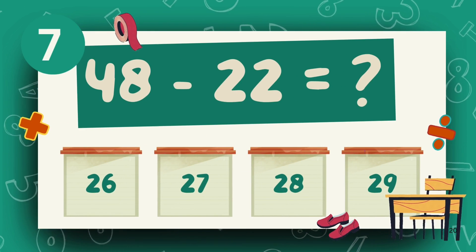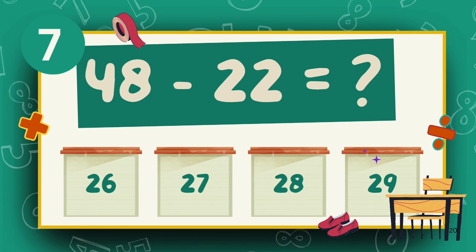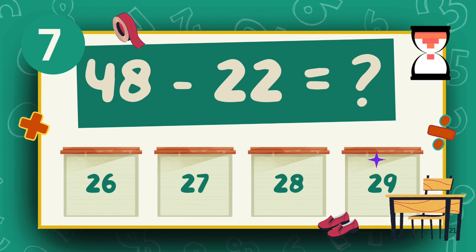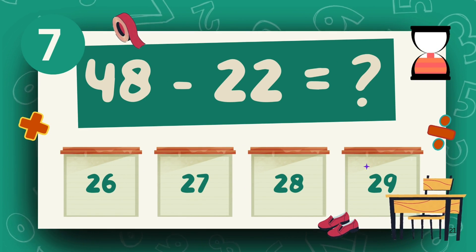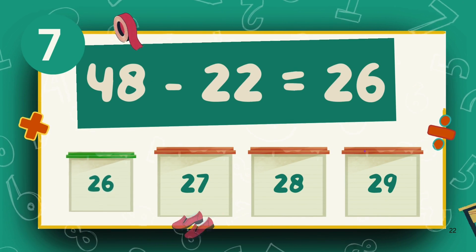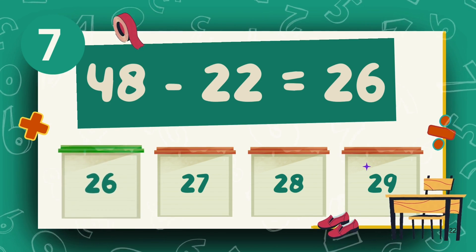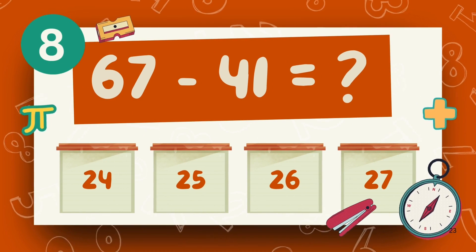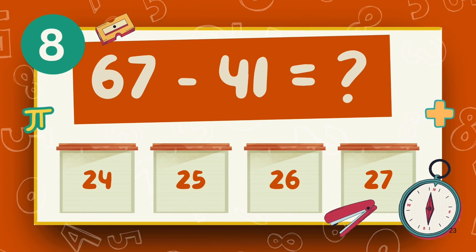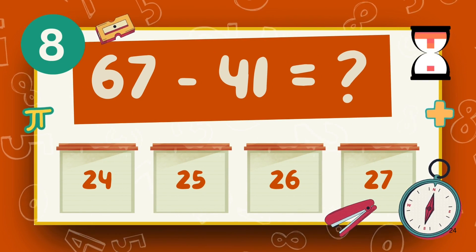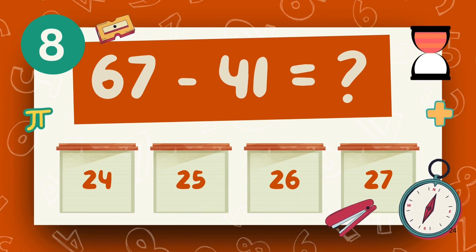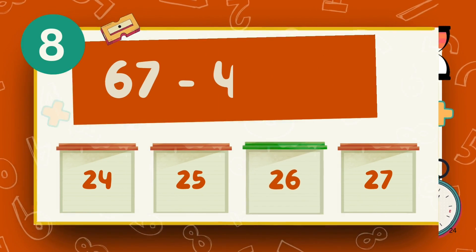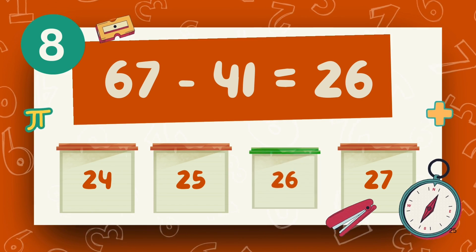What is 48 minus 22? The answer is 26. What is 67 minus 41? The answer is 26.